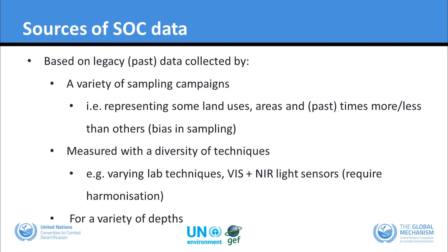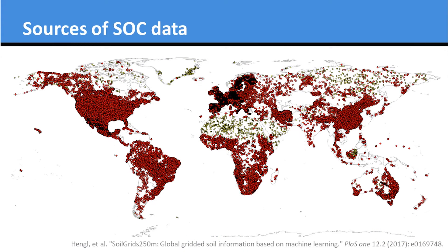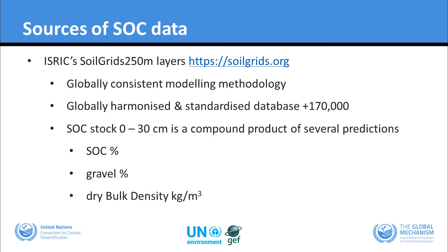Here is a picture of the compilation of the global carbon database that went into the creation of ISRIC SoilGrids 250 meters — a global gridded dataset created with machine learning. The advantage of global data is that it is created with one consistent modeling methodology, it is globally harmonized, the database has been standardized, and there are over 170,000 profiles within it currently. ISRIC World Soil Information is the current custodian of this database.